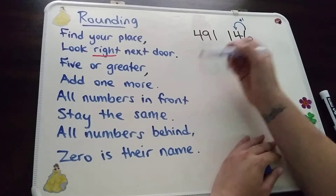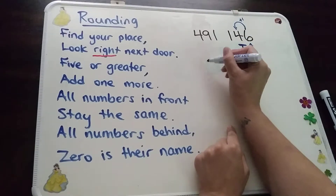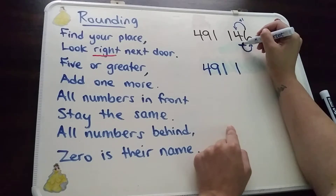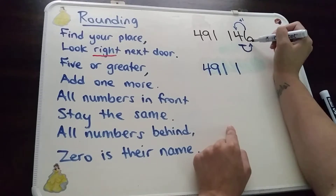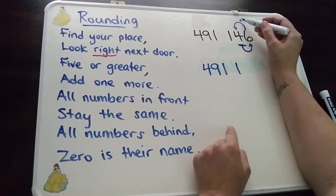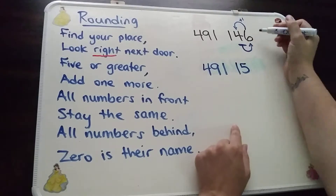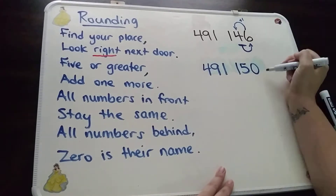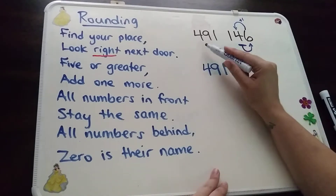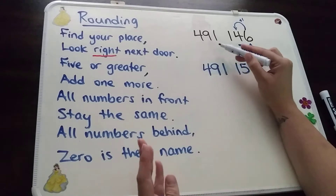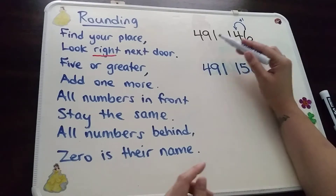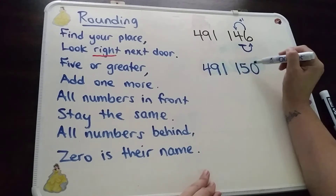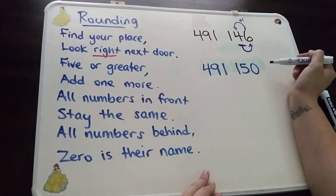All numbers in front stay the same. This time I do have more numbers in the front, so I just have to make sure I'm writing it correctly: my four, my nine, my one, one again. Here's the number I was originally working with. The number next to it was greater than five, so I do have to add one more — this number is going to change to a five. And then all numbers behind, zero is their name, and there's only one number behind, so it's zero. So rounding to the nearest ten: is 491,146 closer to 491,140 or 491,150? It is closer to 491,150 because that six is there.